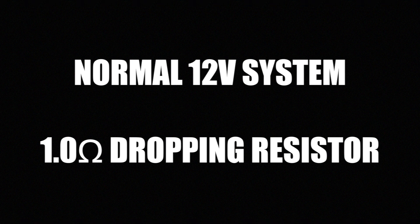Now let's change the 0.47 ohm resistor for one with 1 ohm. The increased resistance will cause a larger voltage drop. The fan will slow down and you'll see that the voltage drops of the resistor and the fan can still add up to source voltage.